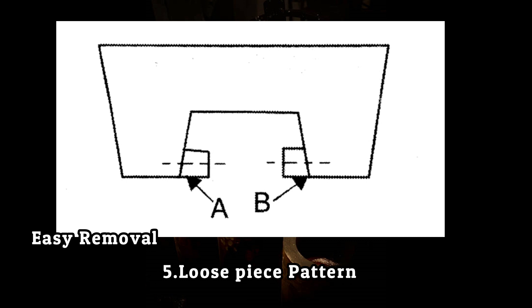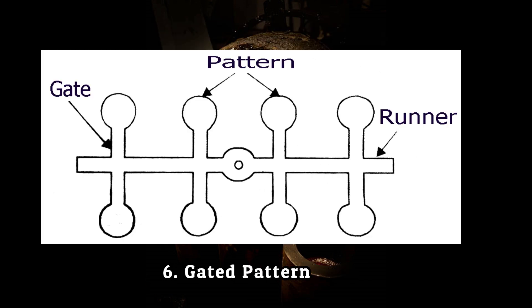Sixth is gated pattern. These are simply more than one loose piece which are attached with a common gating system. These are used for mass production to produce small size cavities into one mold.